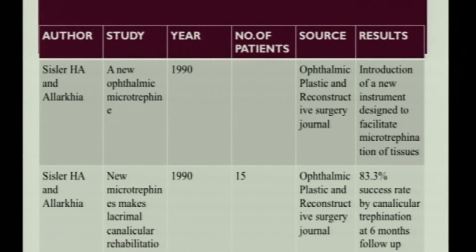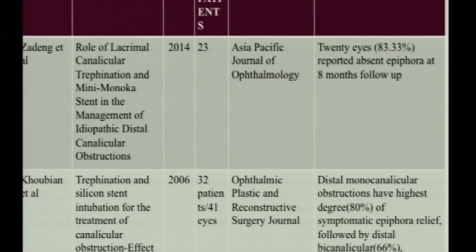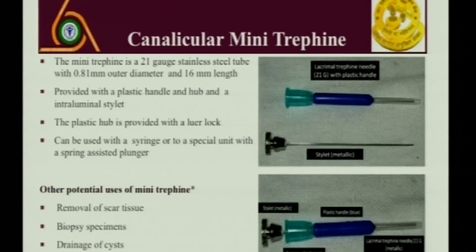The trifine was first described by Sisler in 1990, so it's also called the Sisler's trifine. In his study he found more than 83 percent success rate by canalicular trefinition. Recent studies have also assessed success rate variation according to the site of the block — distal or proximal — and found that the more distal the block, the higher the success rate.